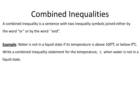A combined inequality is a sentence with two inequality symbols joined either by the word OR or by the word AND.